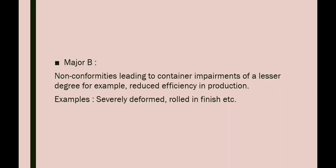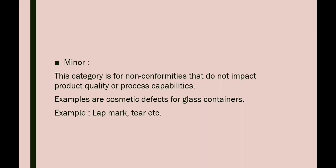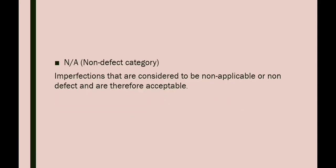The fourth category is minor. These are non-conformities that do not impact product quality or process capability. An example of a minor defect is cap mark and tear. The fifth category is NA, or non-defect. In this category, imperfections are considered non-applicable or non-defect and are therefore acceptable.